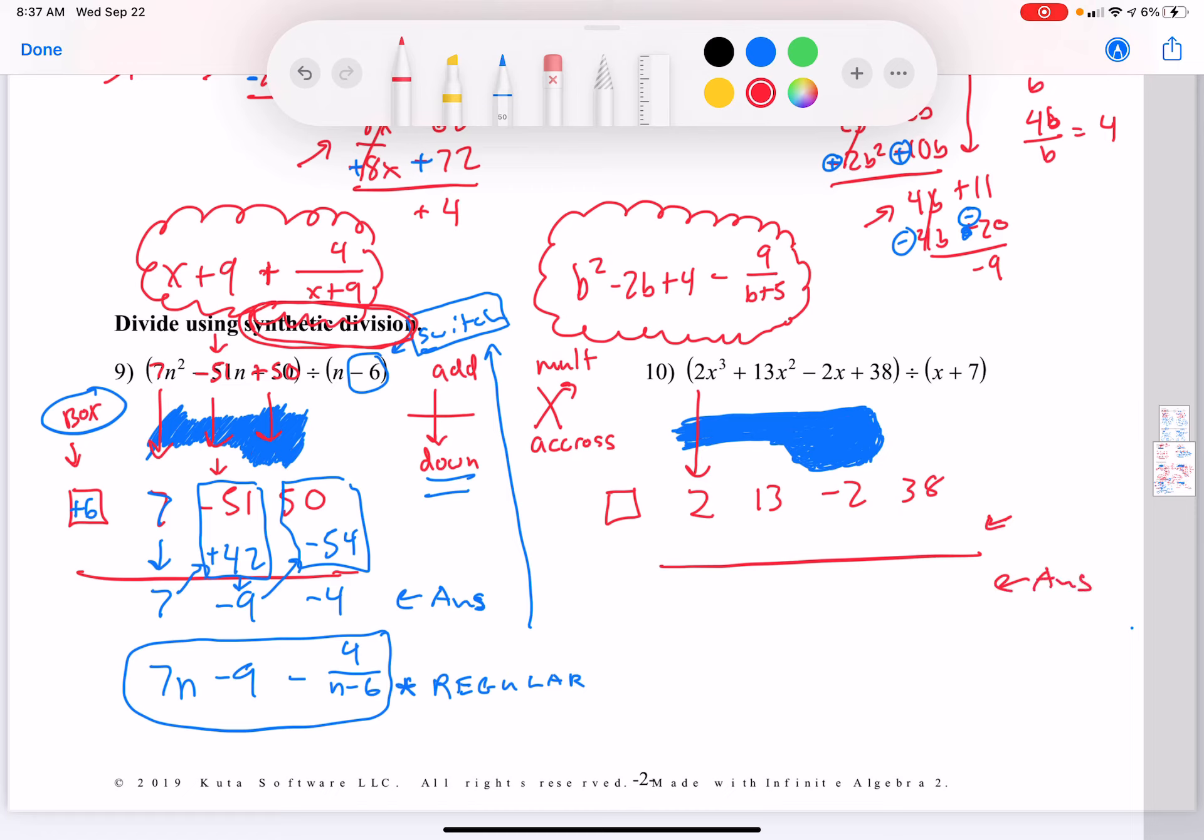This is my answer. One thing that I forgot to mention, for the answer, see how the 7n, it's 7n to the first power. Just a reminder, if it starts off as a squared, which that is n squared, you have to change this one to n1. As everything is going to drop one degree.